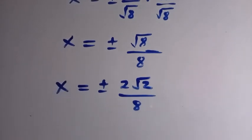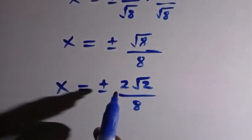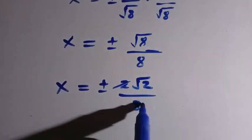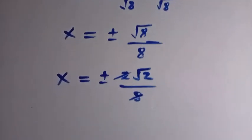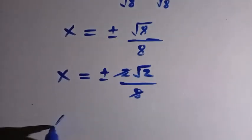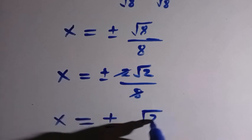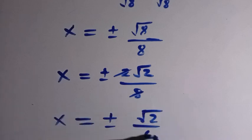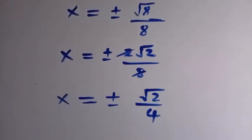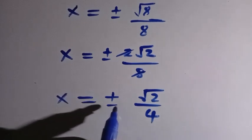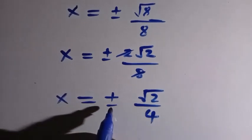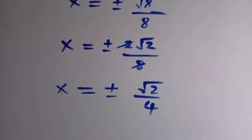So therefore, when we cancel this, so 2 here and 2 here, this gives us x equals plus or minus root 2 divided by 4. So here is the answer we get here. We have two answers here, plus root 2 over 4 or minus root 2 over 4.